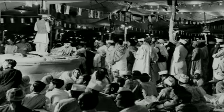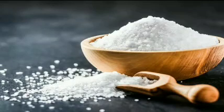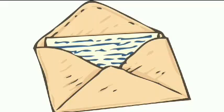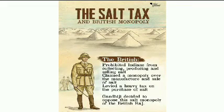So Mahatma Gandhi had to find a way to relate this abstract idea of freedom to more concrete issues of everyday life. Then Mahatma Gandhi found a powerful symbol that could unite the nation. On 31 January 1930, he sent a letter to Viceroy Irwin stating 11 demands. Some of these were of general interest; others were specific demands of different classes, from industrialists to peasants. The idea was to make the demands wide-ranging so that all classes within Indian society could identify with them and everyone could be brought together in a united campaign. The most striking of all was the demand to abolish the salt tax. Salt was something consumed by the rich and the poor alike, and it was one of the most essential items of food. The tax on salt and the government monopoly over its production, Mahatma Gandhi declared, revealed the most oppressive face of British rule.